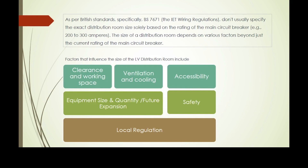Factors that influence the size of the LV switch room include clearance and working space — there should be enough space for each equipment — ventilation and cooling, with enough airflow in the LV switch room, accessibility, where the distribution room should allow easy access for maintenance and repair through doorways and pathways, and equipment size, quantity, and future expansion.